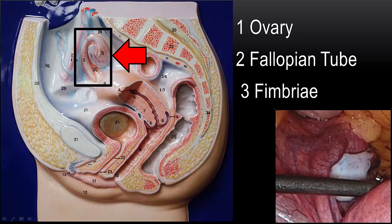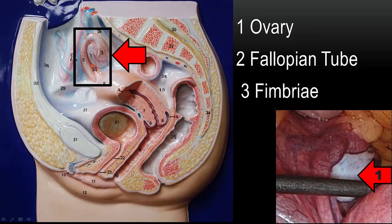And here we see the same structures inside a woman's body. The ovary, number one. The fallopian tube, number two. And again, at the end of the fallopian tube, the fimbria, number three. At the end of the metal rod, underneath the arrow labeled number one, you can see the edge of the uterus.